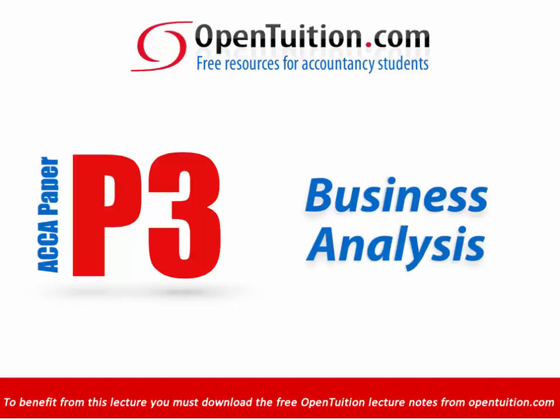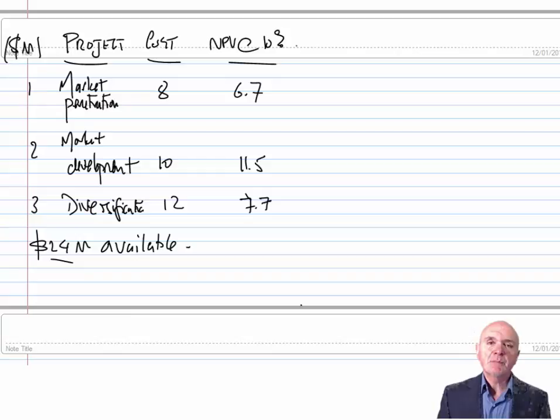This is a lecture from OpenTuition. For the free lecture notes that go with this podcast, please visit OpenTuition.com. Chapter 30 deals with capital rationing and sensitivity analysis. Essentially this is revision of F9 topics. First of all we'll look at capital rationing.